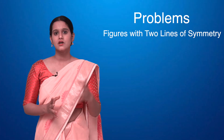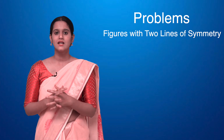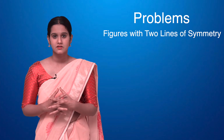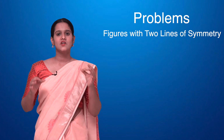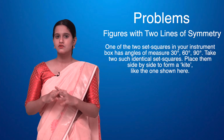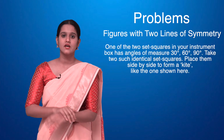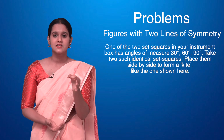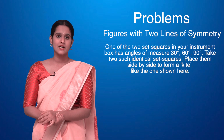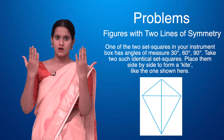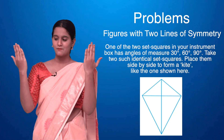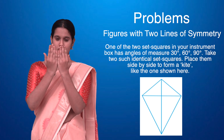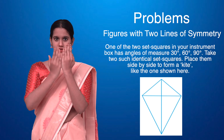For that, let me consider set squares — you know set squares from your instrument box. I'll consider the set square which has angle measures of 30 degrees, 60 degrees, and 90 degrees. I'll take two identical set squares and place them side by side.